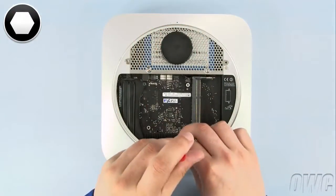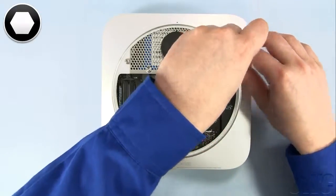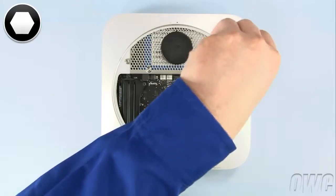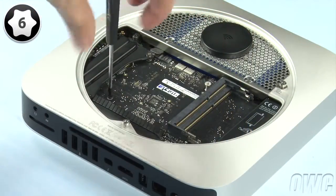Then, reattach the three hex screws around the edge. Again, if you're using your Torx T8 screwdriver to do this, you need to be extremely careful not to tighten them too hard, or you'll strip the screws. Replace the single Torx T6 screw near the rear of the logic board.